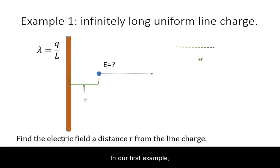In our first example we will use Gauss's law to calculate the electric field at some distance r away from an infinitely long uniform line charge. The line charge density will be designated by lambda and is constant.